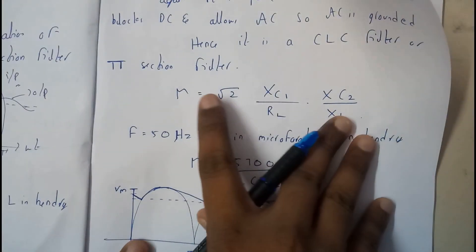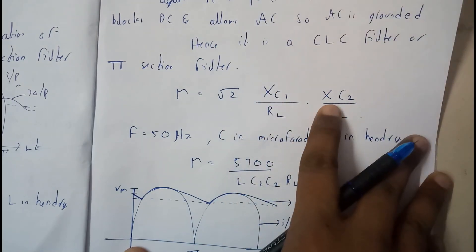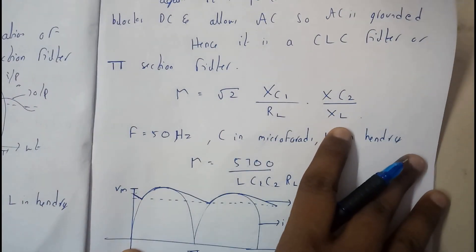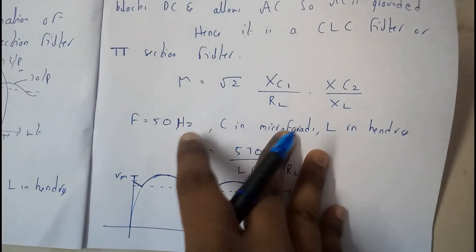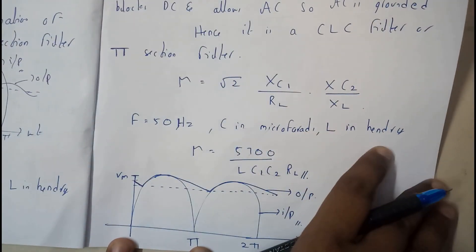If you want the formula, ripple factor equals 2 XC1 by RL into XC2 by XL. If you substitute the basic values, that is frequency equals 50 Hz, C equals microfarad, L equals henry.